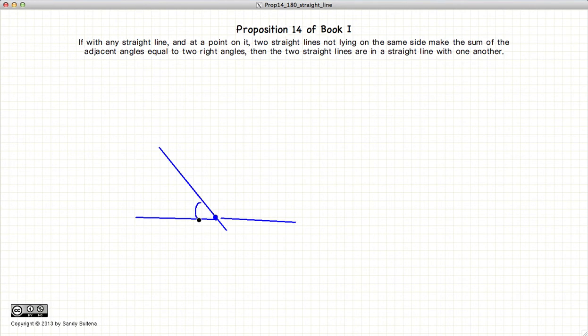if these two angles, and I'll call them alpha and beta again, if these two angles sum up to 180 degrees, then these two lines form a straight line.